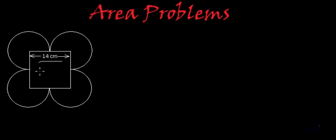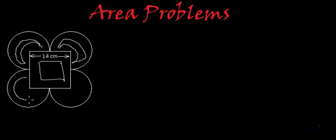See this is the square and these are the three fourth circle which are visible. And one fourth of the circle is actually gone behind the square.